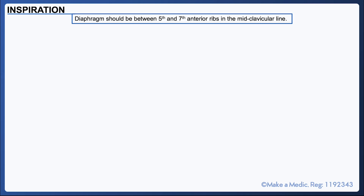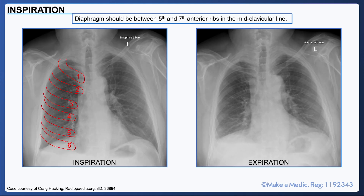Patients are asked to take a deep breath in and hold it when a chest x-ray is being taken, but oftentimes it's much easier said than done. In general, the diaphragm should be at around the level of the fifth to seventh anterior rib in the mid-clavicular line. On the left, we can see six ribs that are visible, whereas on the right, you can only see about four ribs, which makes it harder to evaluate the bases of the lungs.